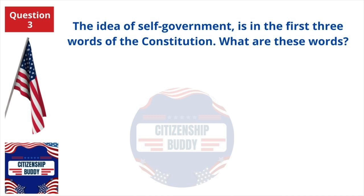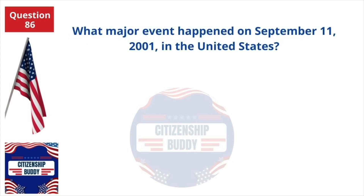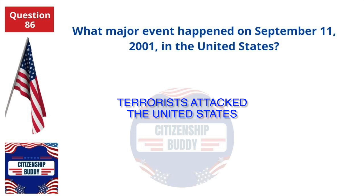The idea of self-government is in the first three words of the Constitution. What are these words? We the people. We elect a president for how many years? 4. What major event happened on September 11, 2001 in the United States? Terrorists attacked the United States.